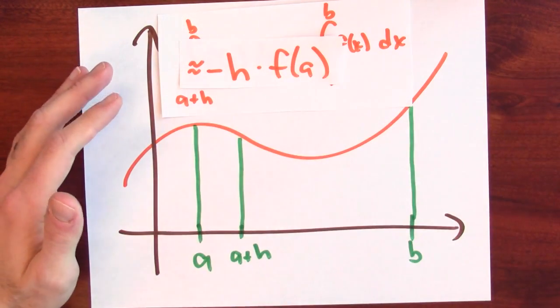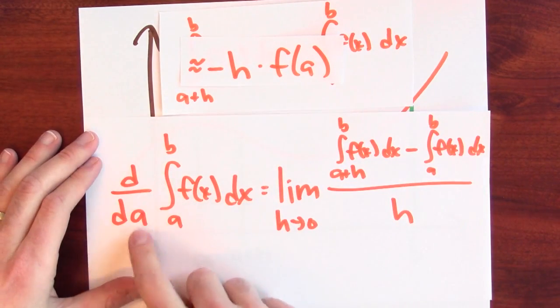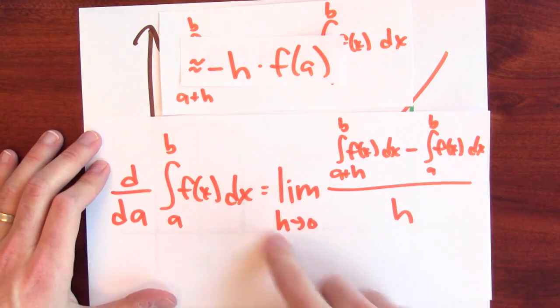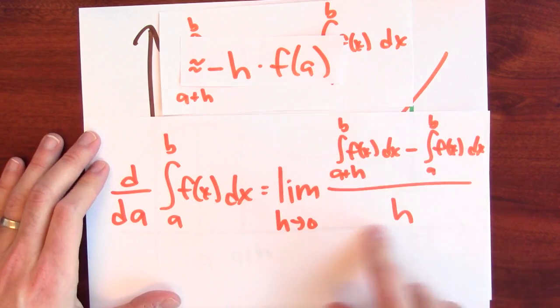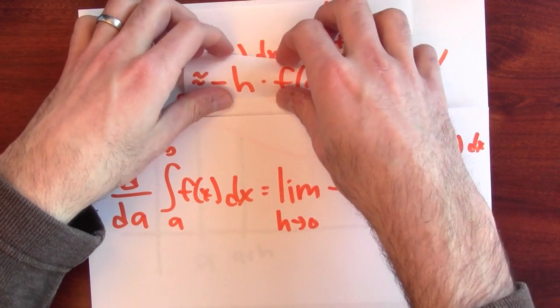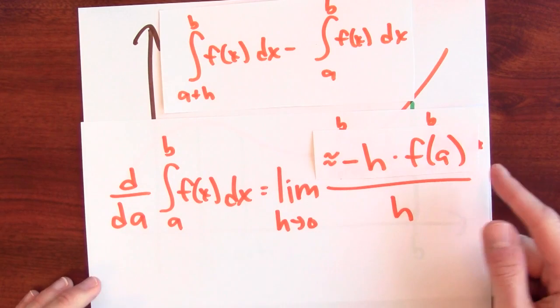Now, how does that help? Well, remember what I'm trying to calculate. I'm trying to differentiate the integral from a to b with respect to a. That means I'm trying to take the limit of this difference quotient. But the numerator here we just saw is approximately negative h times f of a.